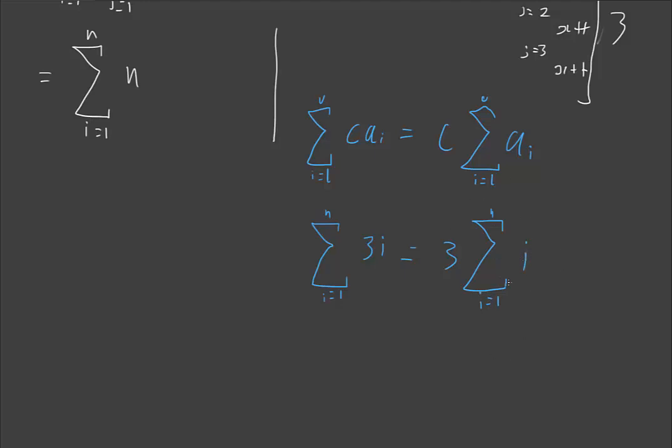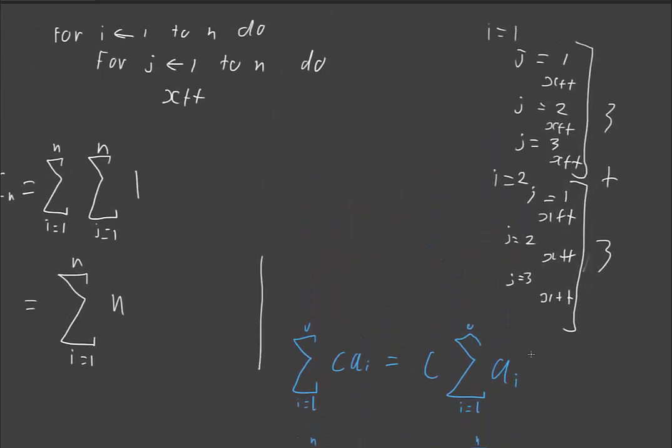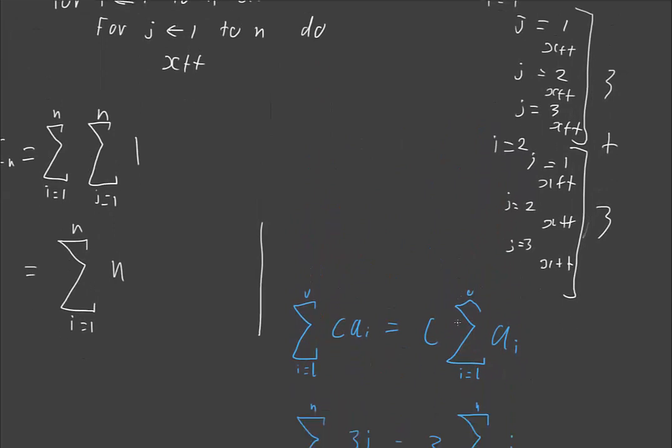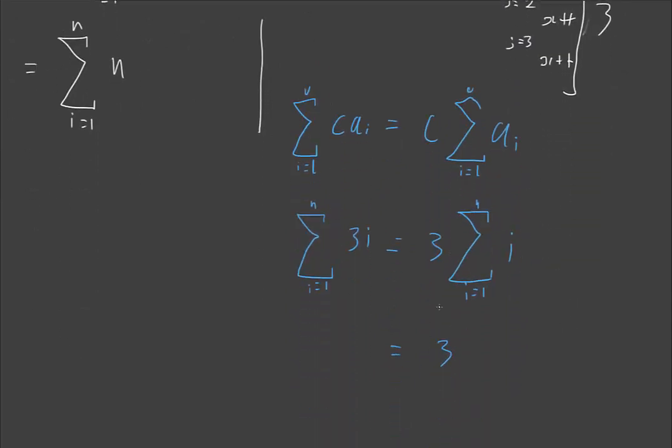And so now that this is in that classic formula we have, we can say that that's equal to 3 outside of n outside of n plus 1 on 2, and that would kind of suddenly be our kind of expanding that out.